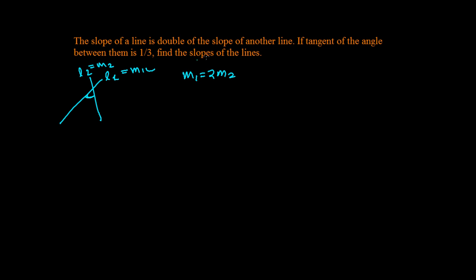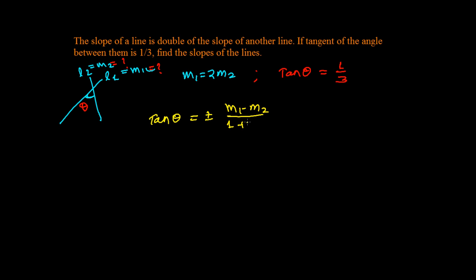Let theta be the angle between them. Then tan(theta) = 1/3. We know that whenever we have two lines with slopes m1 and m2, and the angle between them is theta, then tan(theta) = ±(m1 − m2) / (1 + m1·m2).